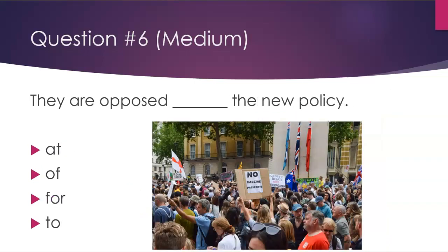Number six: They are opposed ___ the new policy. The options are: at, of, for, to. The answer is: to.